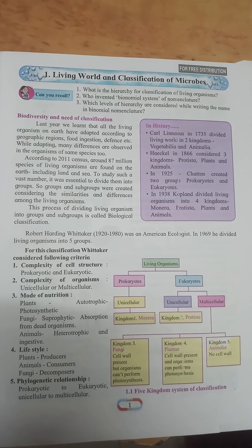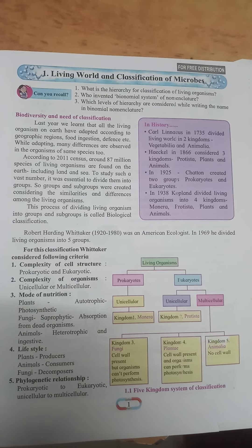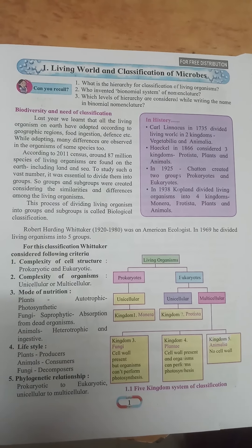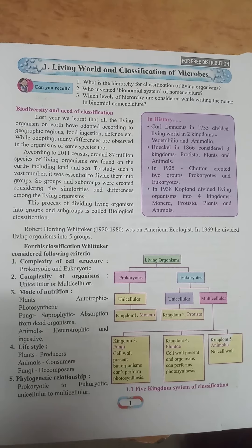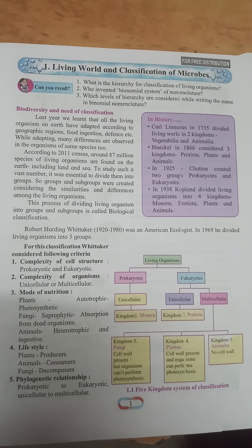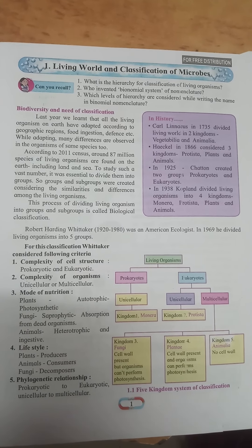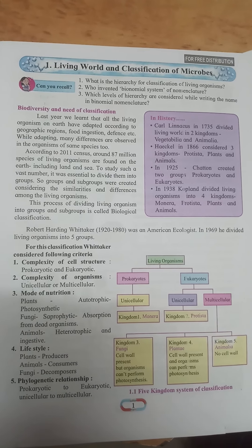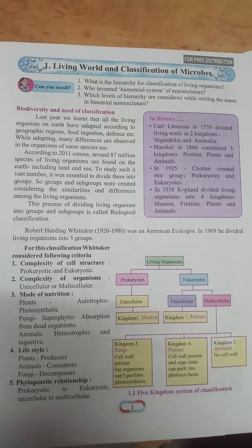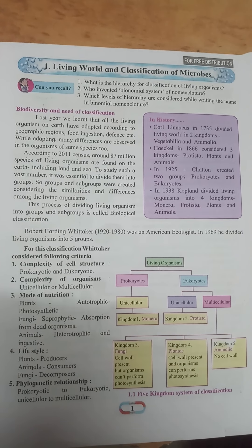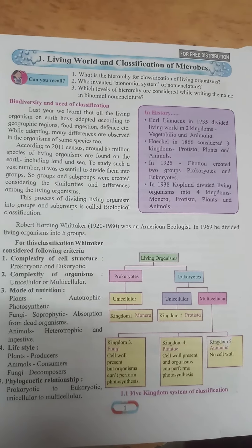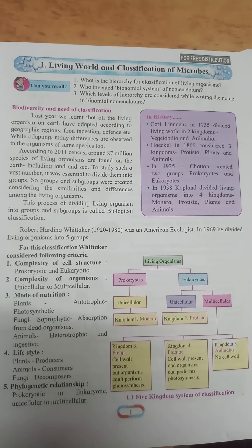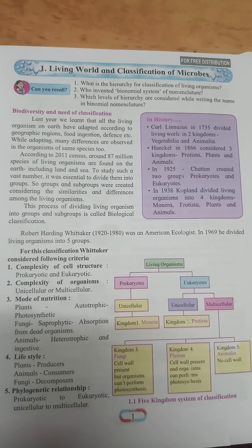Students, there are lots of living things on this earth. On the earth we find two types of living things: plants and animals. There is a variety of the living world found on the earth. In this topic we are going to learn about the living world and also the classification of microbes.